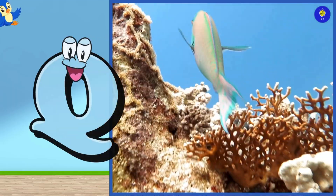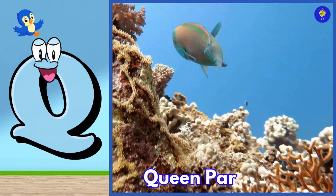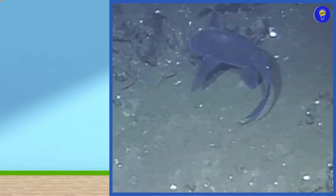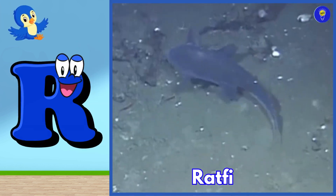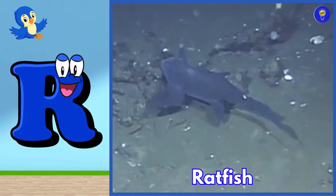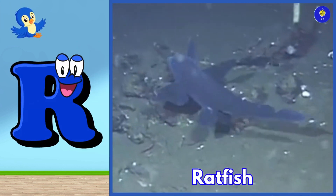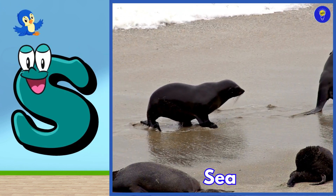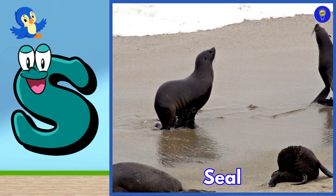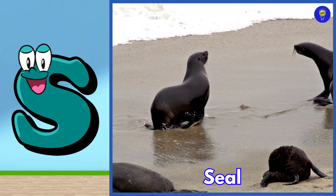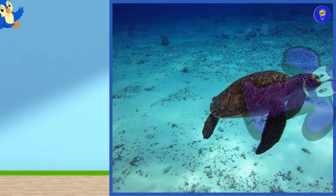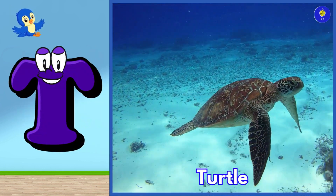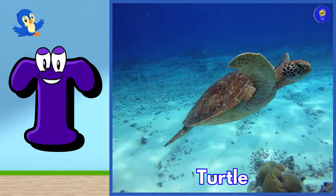Q is for queen parrotfish. Quh, queen parrotfish. R is for ratfish. Rr, ratfish. S is for seal. Suh, seal. T is for turtle. Tuh, turtle.